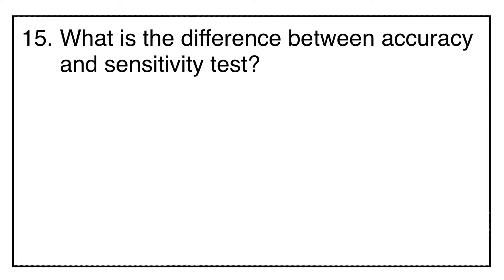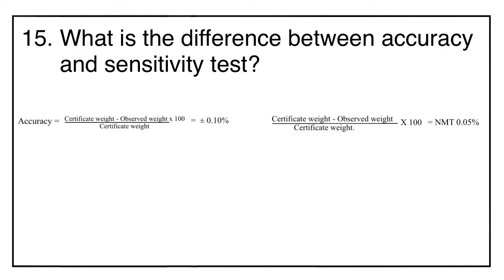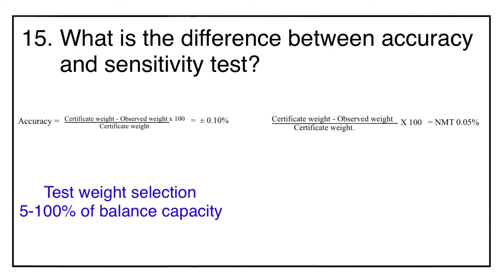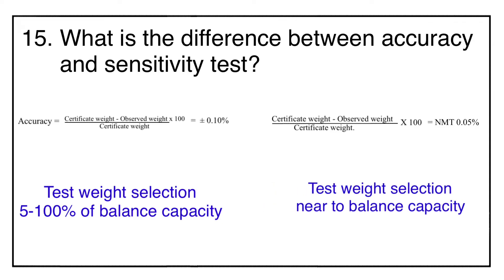Question number fifteen: what is the difference between the accuracy test and the sensitivity test? Both tests use the same formula; however, the key difference is in the test weight selection. The accuracy test uses a test weight between 5 to 100% of the balance capacity, whereas the sensitivity test is performed by selecting a weight near to the maximum balance capacity.